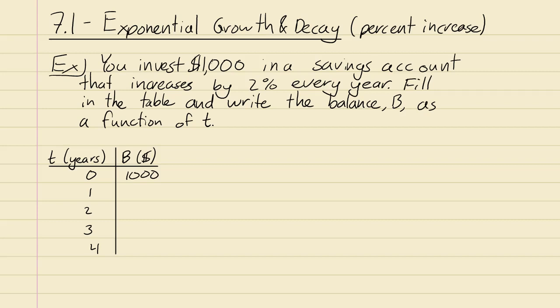Pretend you have $1,000 in a savings account that increases by 2% every year. They don't just give you your 2% of interest, they invest it back in the account. So in subsequent years, you'll get 2% of the bigger value, so it's compound interest.